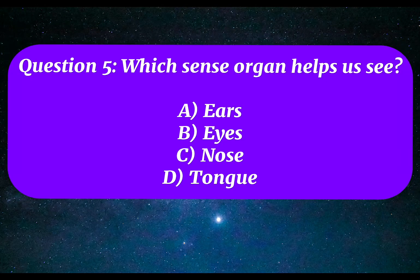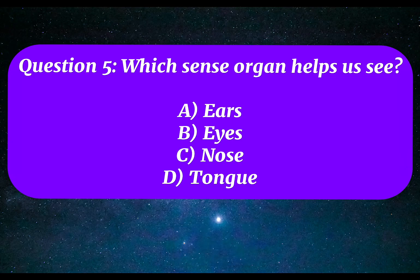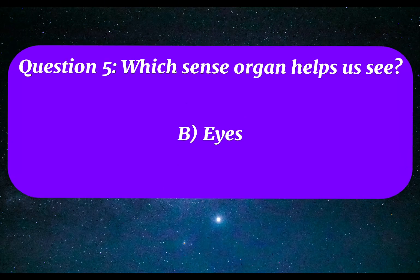Question 5. Which sense organ helps us see? A. Ears. B. Eyes. C. Nose. D. Tongue. Correct answer: B. Eyes.